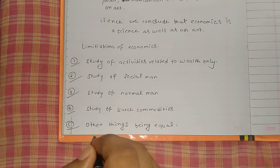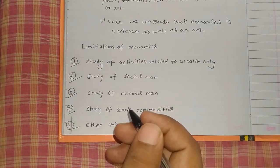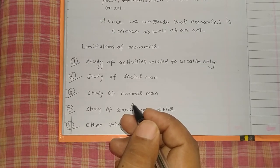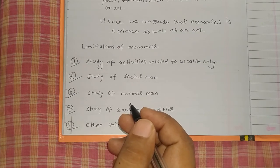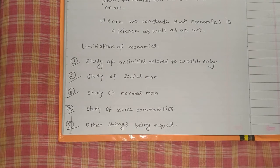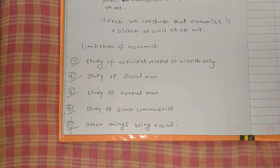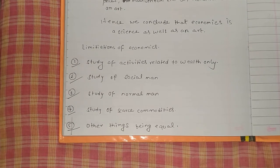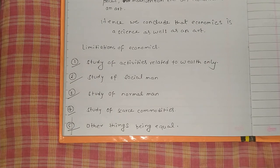The fifth and last limitation is 'other things being equal' (ceteris paribus). All economics laws are based on the assumption that other things remain equal. However, in reality, people are affected by changes in many things like customs, habits, and use of commodities — meaning this assumption does not always hold true in practice.